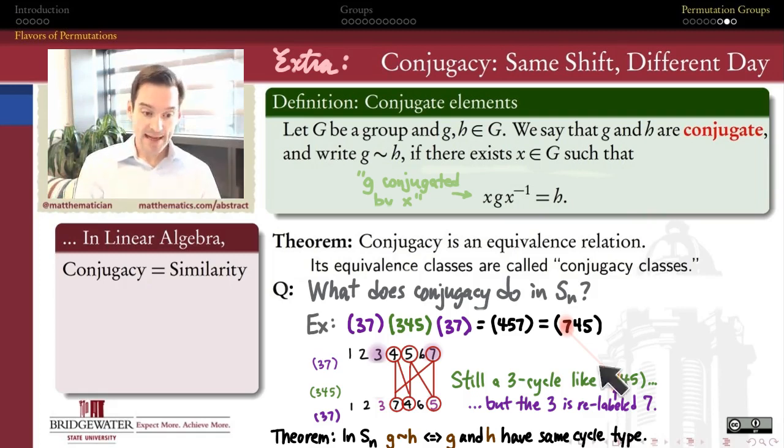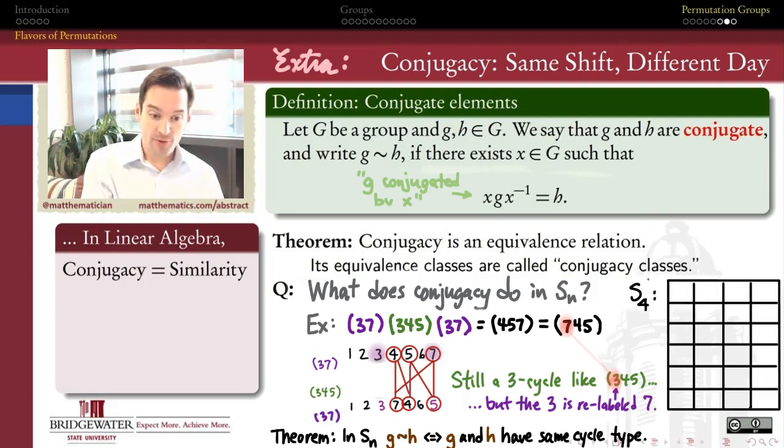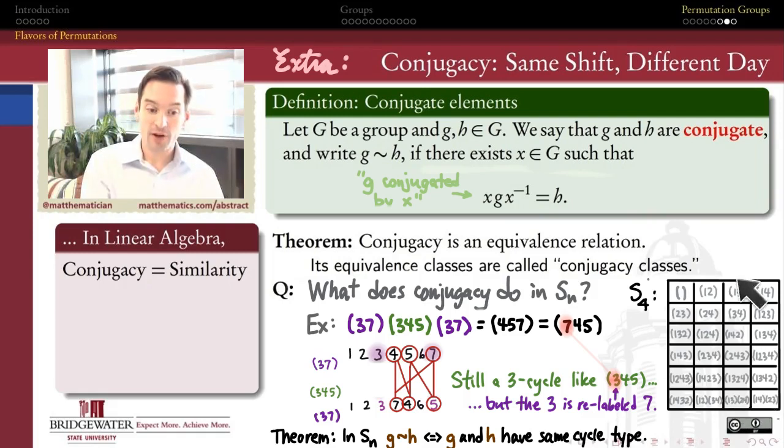So, for example, any 2, 3 cycles inside of S_n are conjugate to one another. So if I think about S_4 for a minute, it's got 24 elements in it. I can list them all. So I start with the identity. I maybe list out all the transpositions. Then I list out all the 3 cycles. Then I'll list out all of the 4 cycles. And then once I've listed all the 4 cycles, I still have 3 more elements left that are the product of disjoint 2 cycles. So here's all 24 of the elements of S_4.